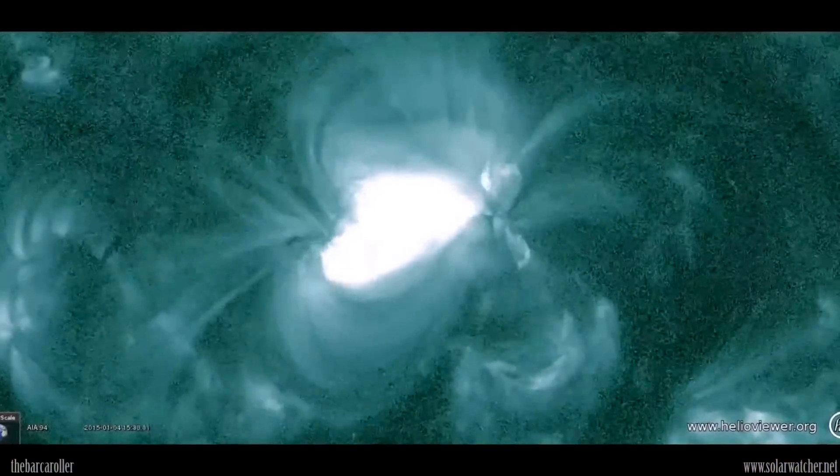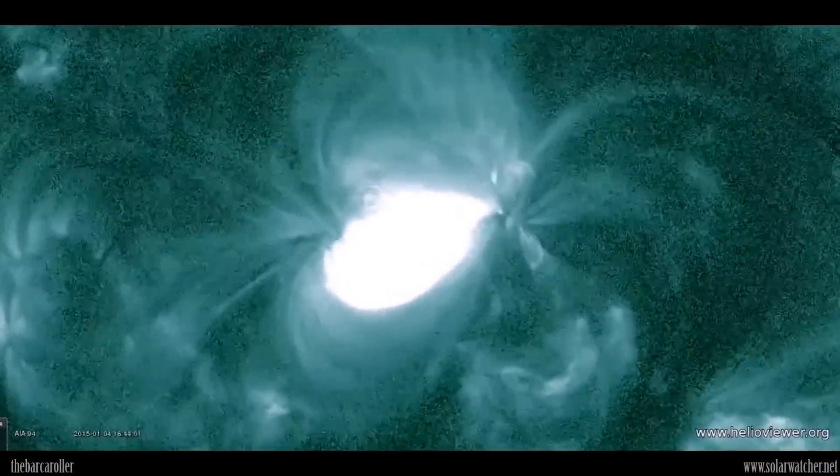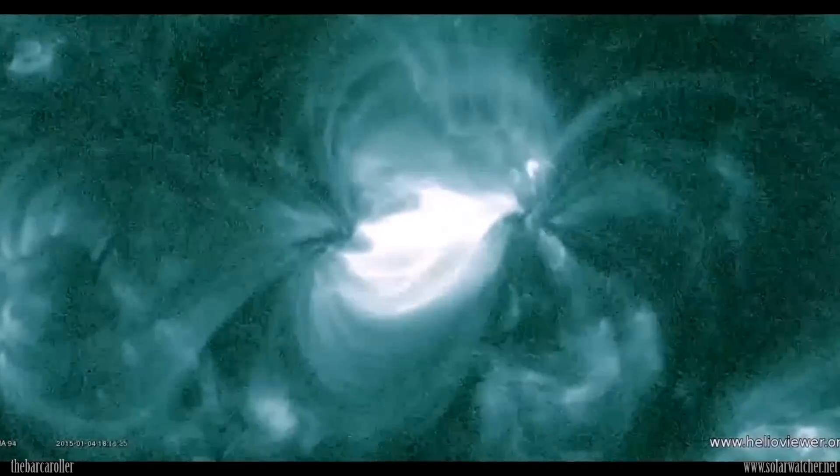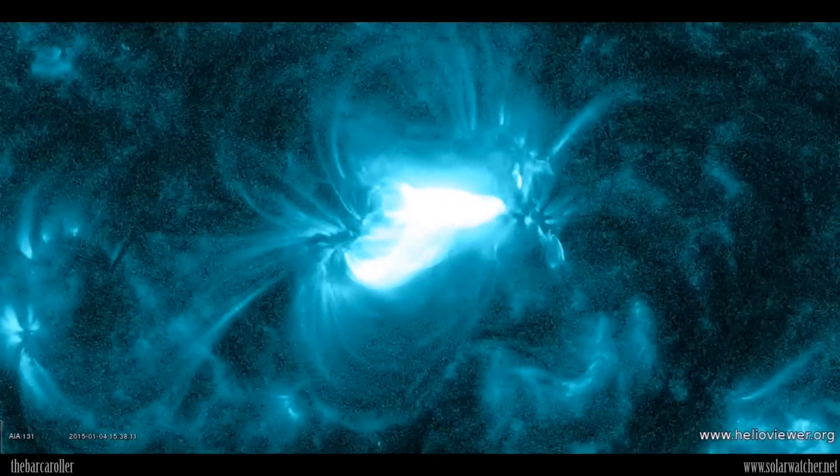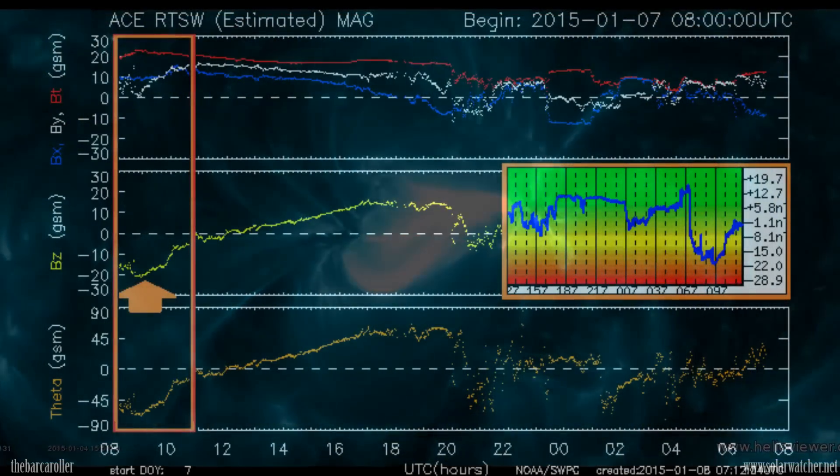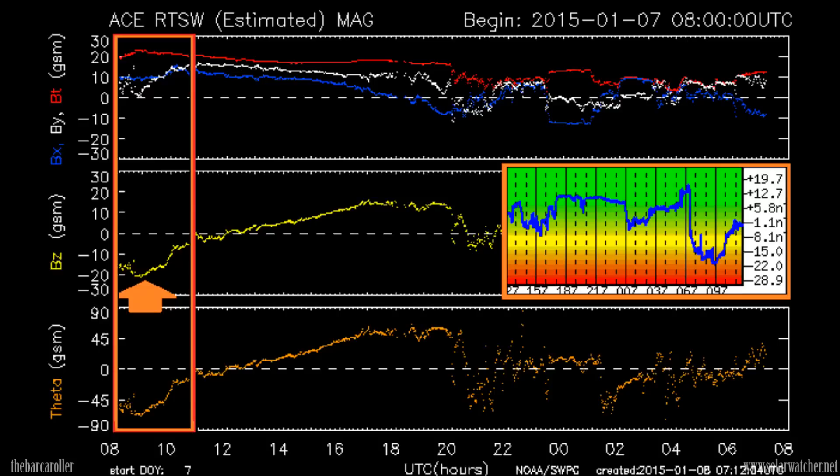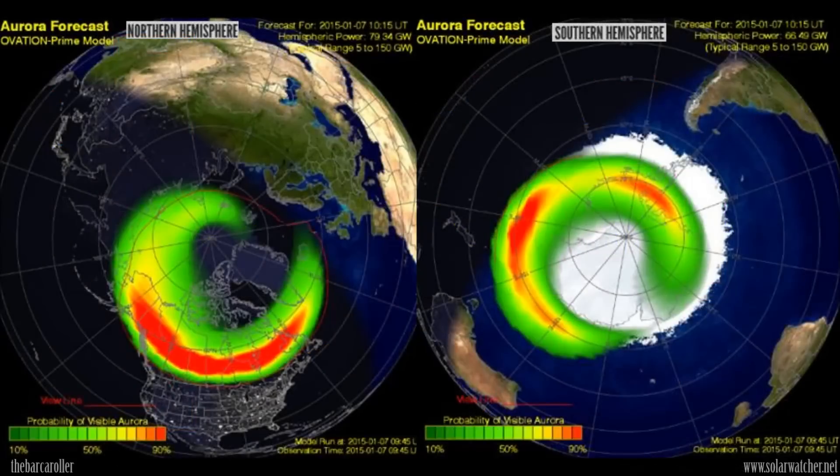On the 4th of January, an M1.3 solar flare was registered from active region 12253. This eruption took place while in an earth-facing position, and the resulting coronal mass ejection impacted the earth's magnetic field two days later, where a G3 class geomagnetic storm resulted.